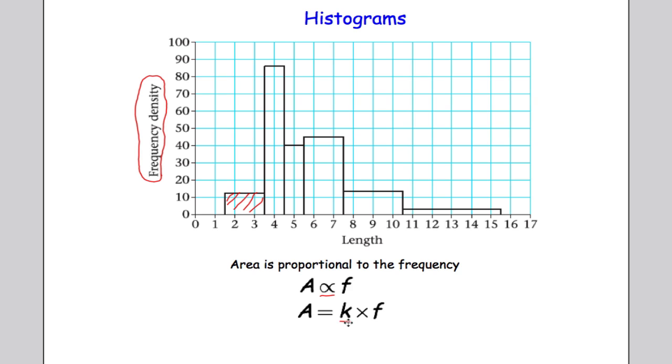Now that's only when k is 1. For GCSE, the area was equal to the frequency when k equals 1. For A level, you'll find that not all the time will k equal 1. Some questions require you to work out the height of a bar, and that requires you to understand this constant of proportionality. If you think of a circle, the circumference is proportional to the circle's diameter, and that's where we get c equals pi d. Pi is your constant. It's similar - A equals k times f, where the area of the bar equals some constant multiplied by the frequency. If k equals 1, the area equals the frequency.